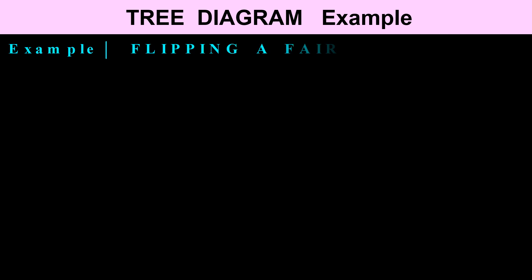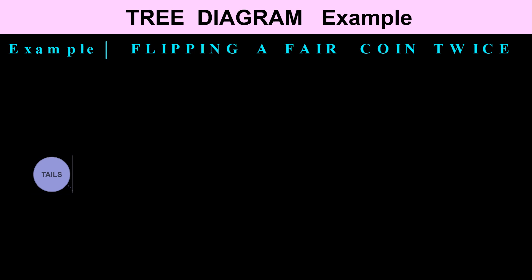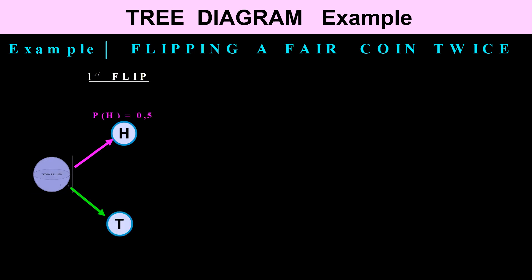You can also represent the sample space using a tree diagram. Let's consider the case where we flip a fair coin twice. For the first flip, it can either be heads or tails. The probability of getting a head is 1 over 2, or 0.5, and the probability of getting a tail is also 0.5.